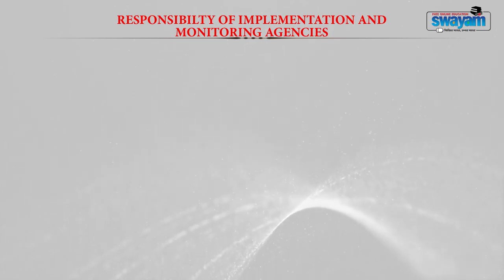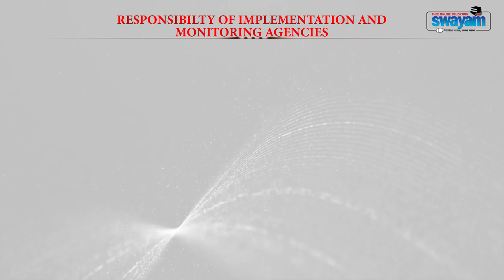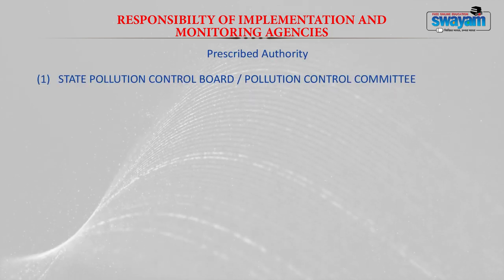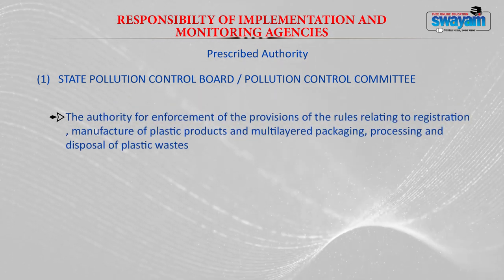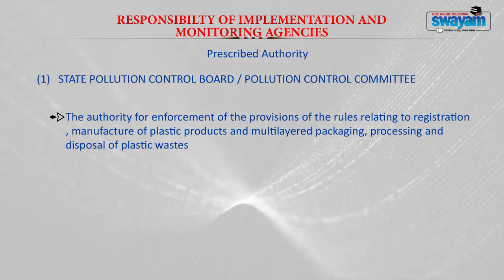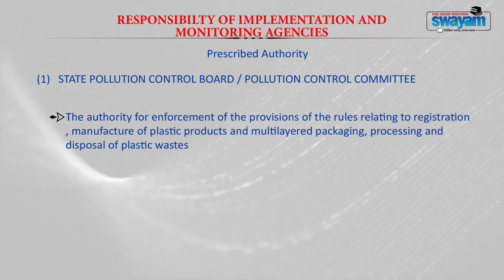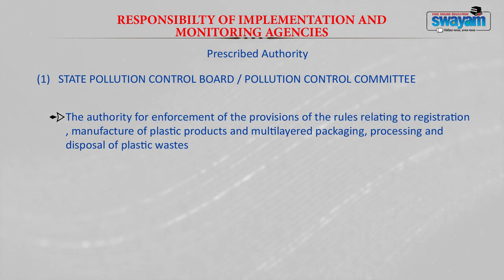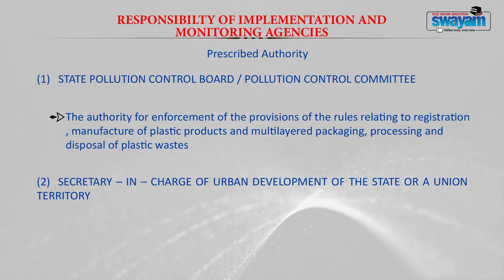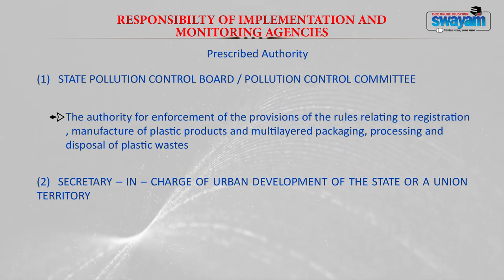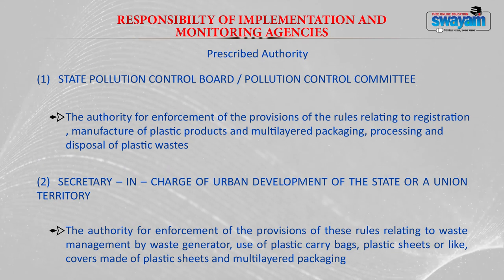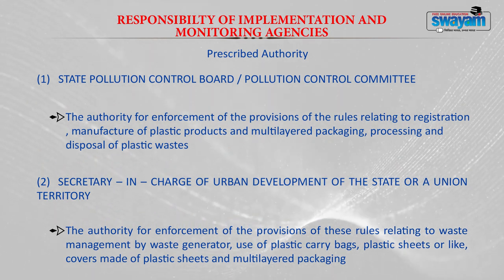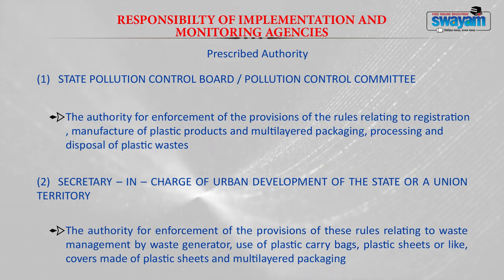Regarding implementation and monitoring agencies: State Pollution Control Boards or Pollution Control Committees are the authority for enforcement of provisions relating to registration, manufacture of plastic products and multilayered packaging, and processing and disposal of plastic waste. The Secretary in charge of Urban Development of the state or union territory is the authority for enforcement of provisions relating to waste management by waste generators, use of plastic carry bags, plastic sheets, and covers made of plastic sheets and multilayered packaging.